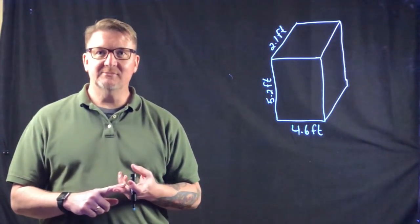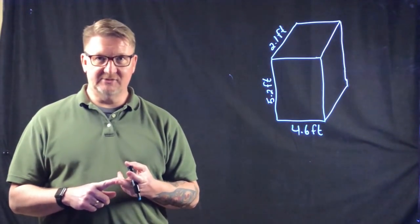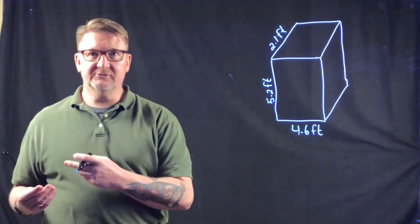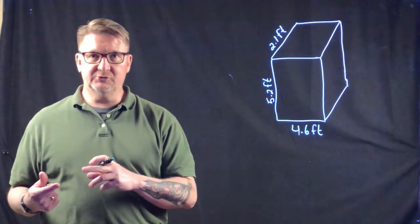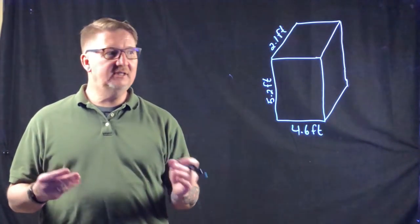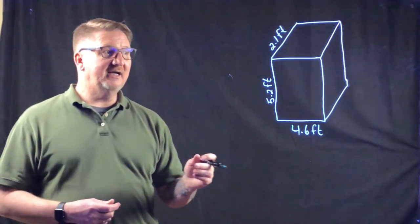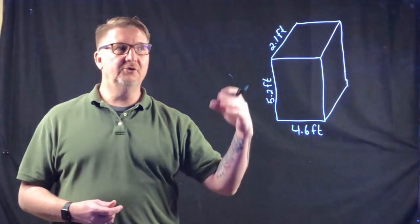Area equals base times height, and area equals one half base times height — those are the respective formulas for the rectangle and the triangle. That's all you need to find the volume of these shapes. You're also going to be able to find a missing dimension when you're given the volume.